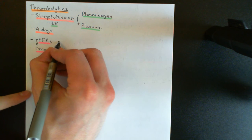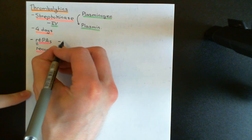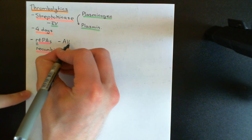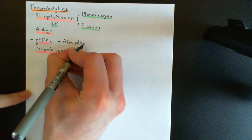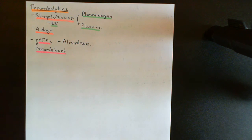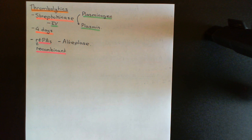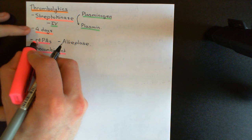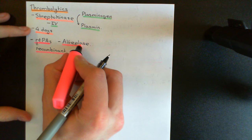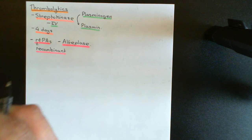One notable example of a recombinant tissue plasminogen activator is called alteplase. Just like recombinant insulin, where we take the human insulin gene, put it into bacteria, and get them to make human insulin for injection into insulin-dependent diabetics — here we've taken the gene for tissue plasminogen activator, put it into another organism to produce it, and this is called recombinant tissue plasminogen activator. An example of one of these is alteplase.